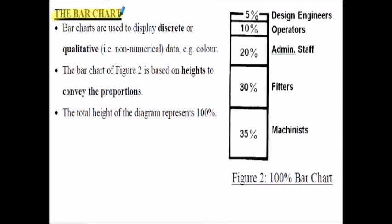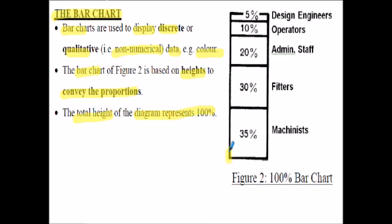The bar chart is used to display discrete or qualitative, that's non-numerical data, for example colors. The bar chart shown in figure two shows that heights are used to convey the proportions. The total height of the diagram in this particular case represents 100%, so each of these sectors here represent percentages to a scale that leads to a total of 100%.